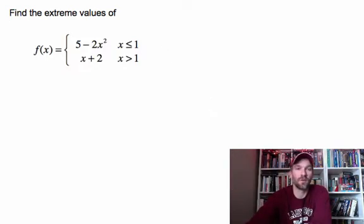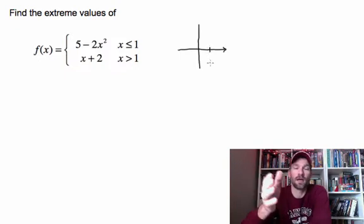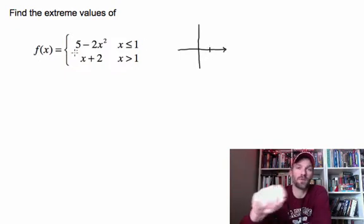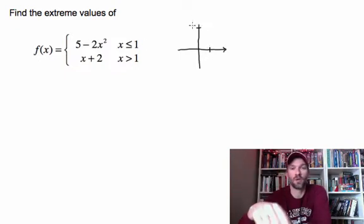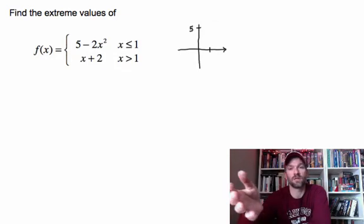So the first thing we need to do is get a graph of what this function looks like. For x values up to and including 1, we're going to use 5 minus 2x squared, which is going to give us an upside down parabola.